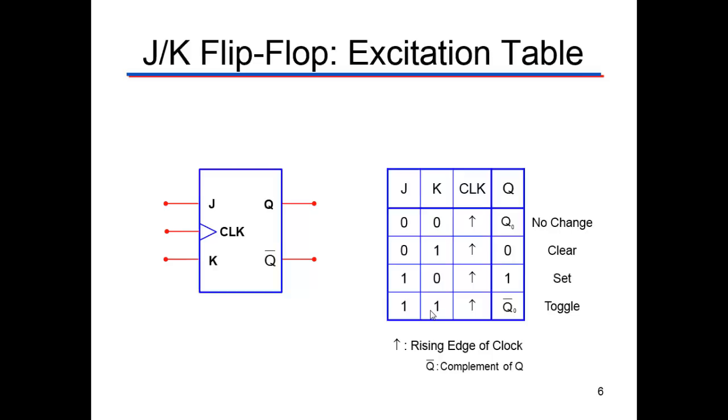So when they're both the same, it doesn't change. If they're zero, if they're both the same and they're one, it toggles it. If J is zero, then it clears Q. If J is one, then it sets Q. And remember that not Q is just the opposite of Q.